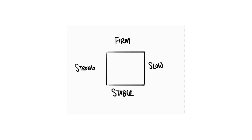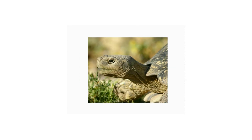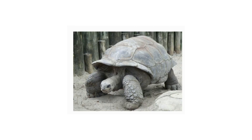Squares have mental associations of being firm, strong, slow, stable — kind of unmoving. Check out this sperm whale: it's quite a dangerous predator if you're a squid, but it's a slow-moving hulk, kind of like a big bus. Here's our giant tortoise — he's basically nothing but squares in his design.